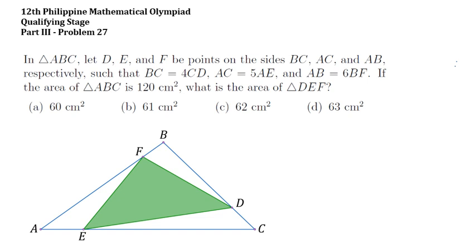We have triangle DEF inscribed in triangle ABC. The area of triangle ABC is 120 cm². We also have the conditions that BC is 4 times CD, AC is 5 times AE, and AB is 6 times BF. We have to find the area of triangle DEF.